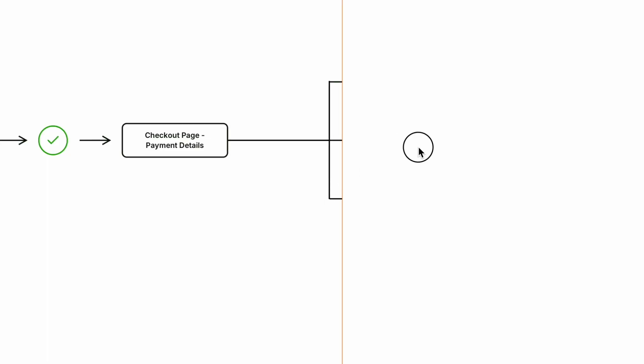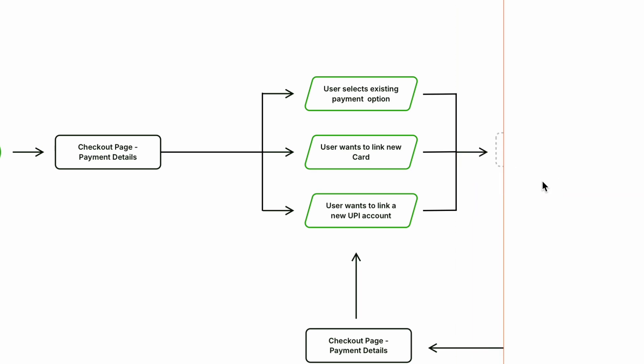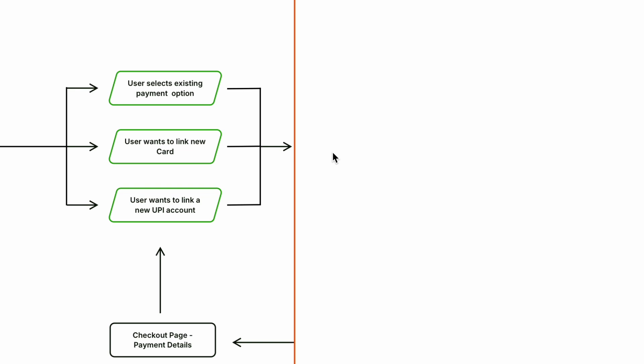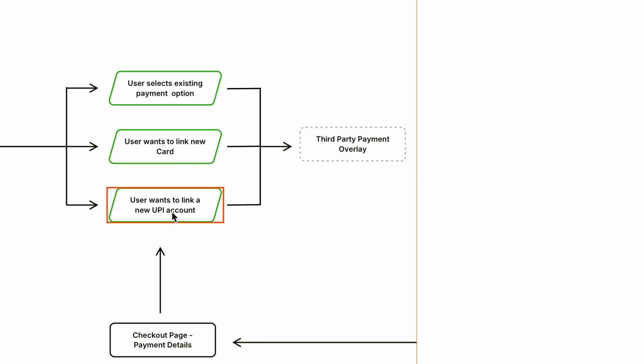As I reveal more of the flow, you can see the multiple sub-steps under the payment step. The user can select an existing payment option if they're a returning user, link a new card, or link a new UPI account. Each of these leads to a slightly different path. If they want to link a new card or UPI account, they'd be redirected to a third-party overlay such as Razorpay, JustPay, or PayPal.